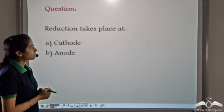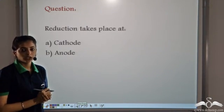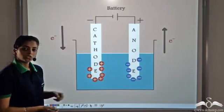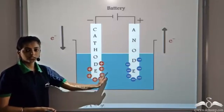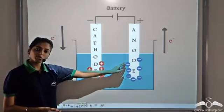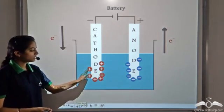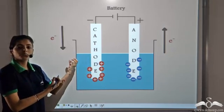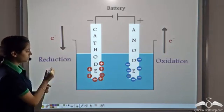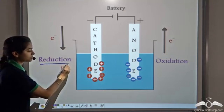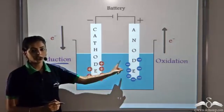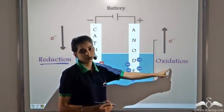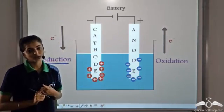Let's do a question: reduction takes place at which electrode — at cathode or at anode? The cations migrate towards the cathode and take electrons from it, so since electrons are being added, reduction takes place at the cathode. At the anode, the anions lose electrons, so oxidation takes place at the anode. Therefore, electrolysis is always a redox reaction.